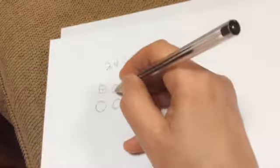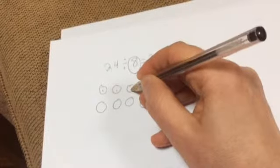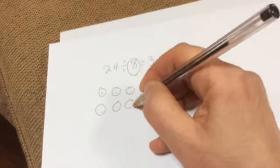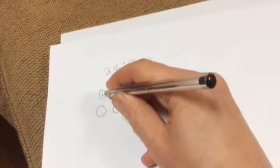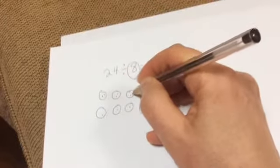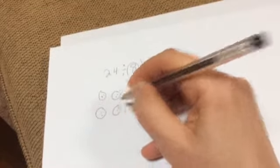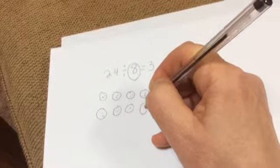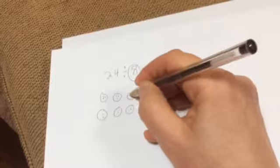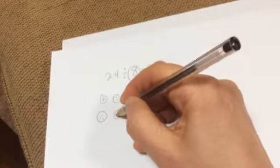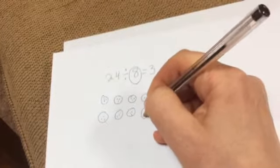Now I'm going to count 1, 2, 3, 4, 5, 6, 7, 8. There's my first 8. Then 9, 10, 11, 12, 13, 14, 15, 16, 17, 18, 19, 20, 21, 22, 23, 24.